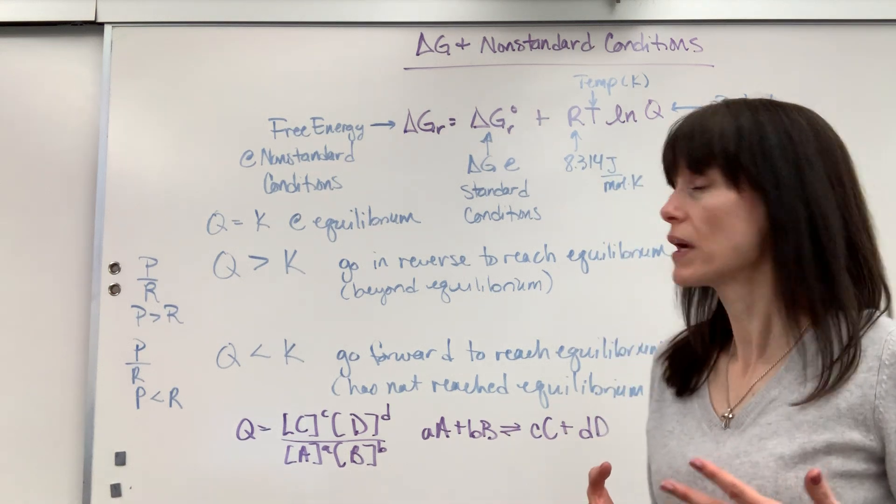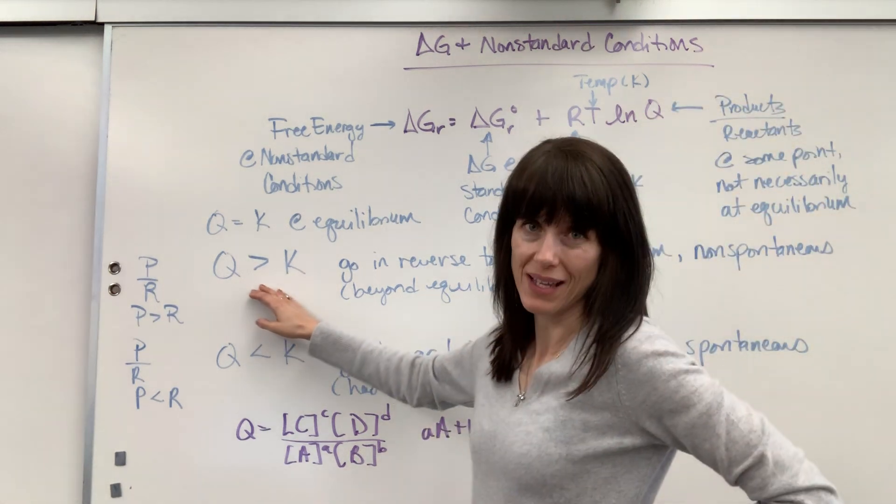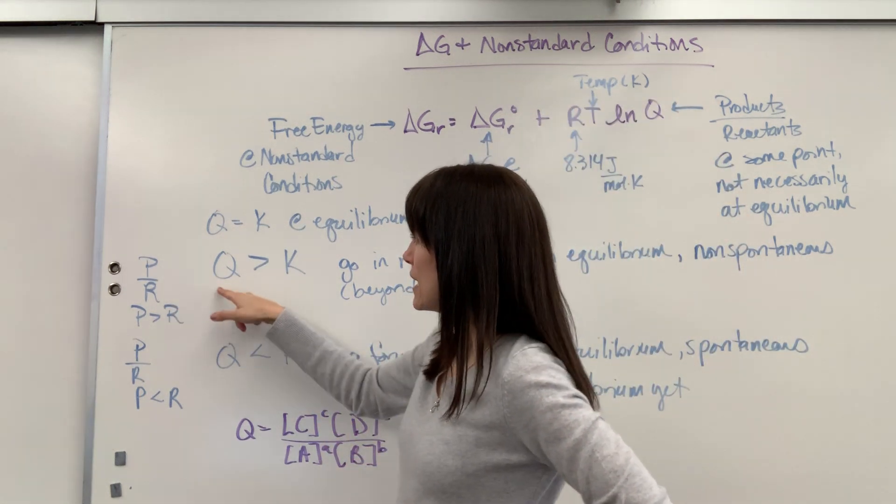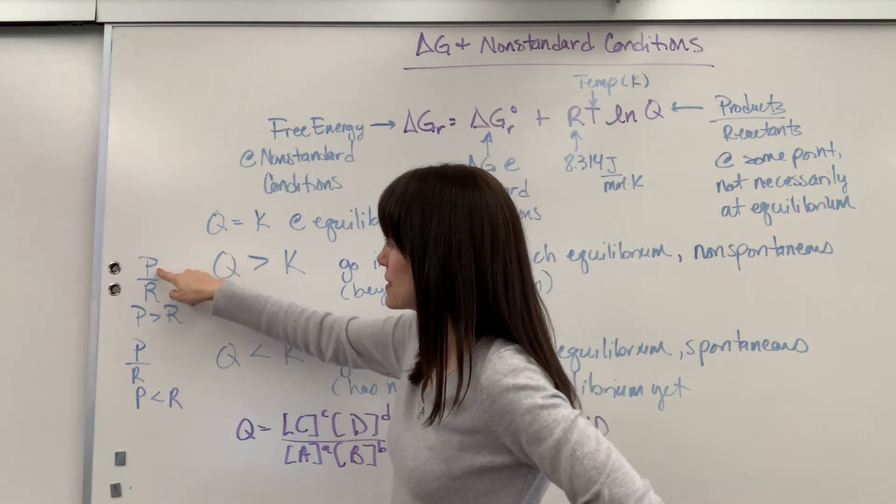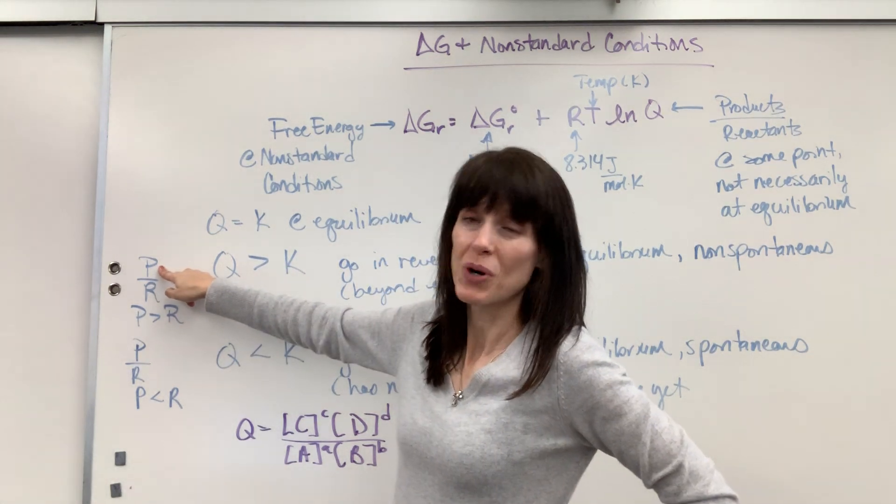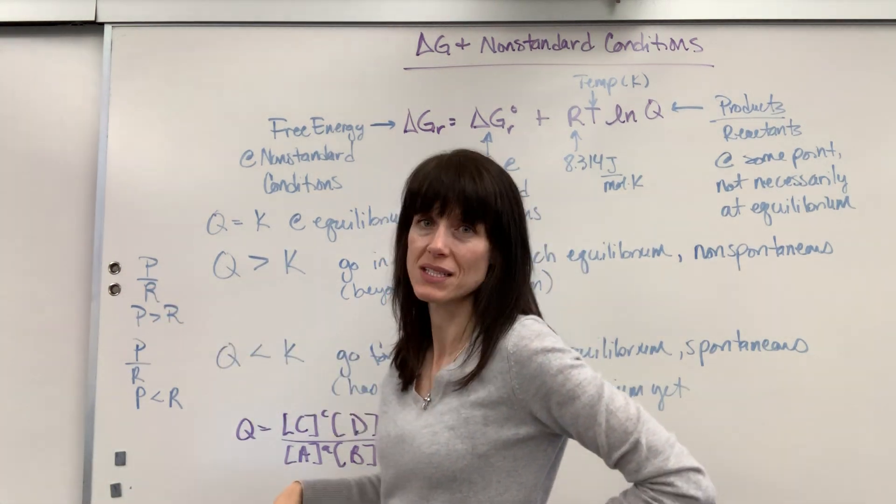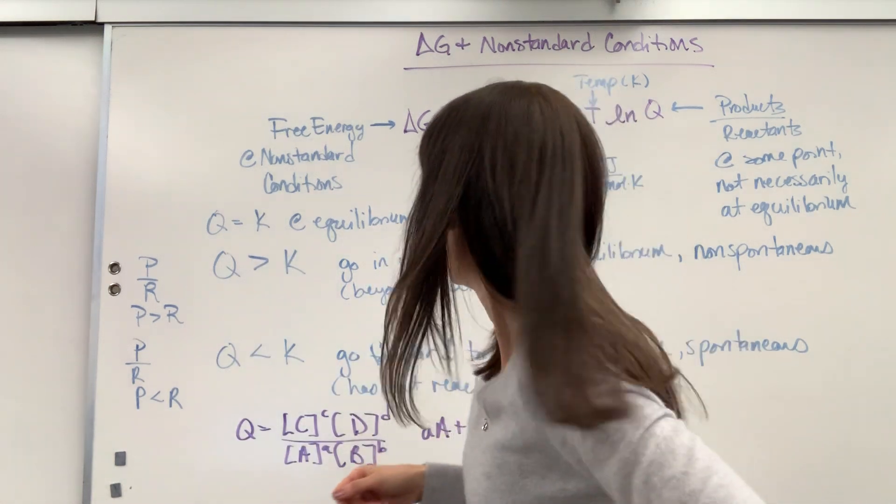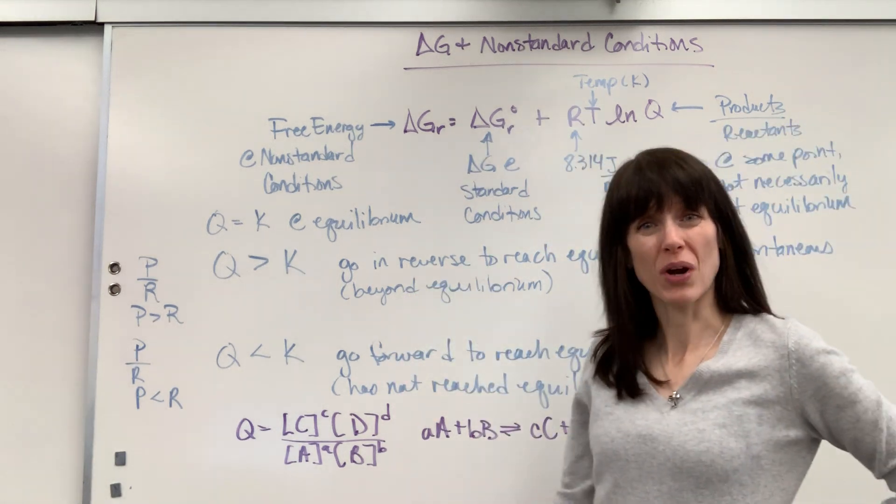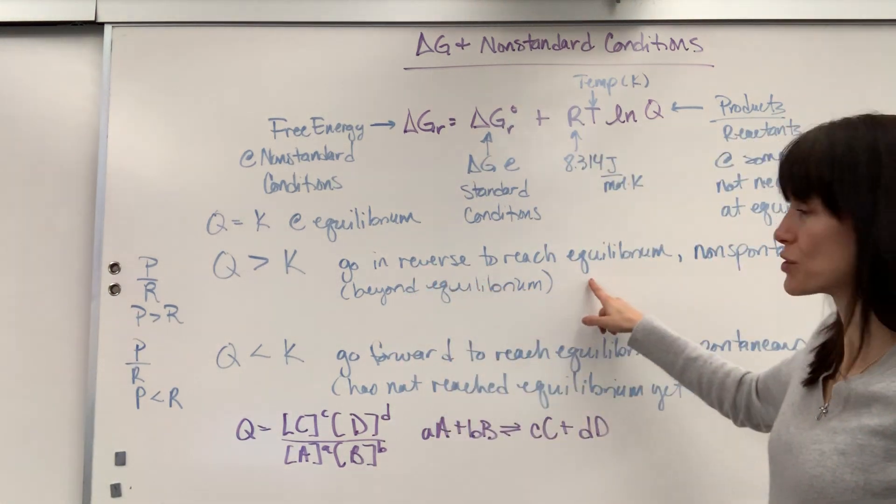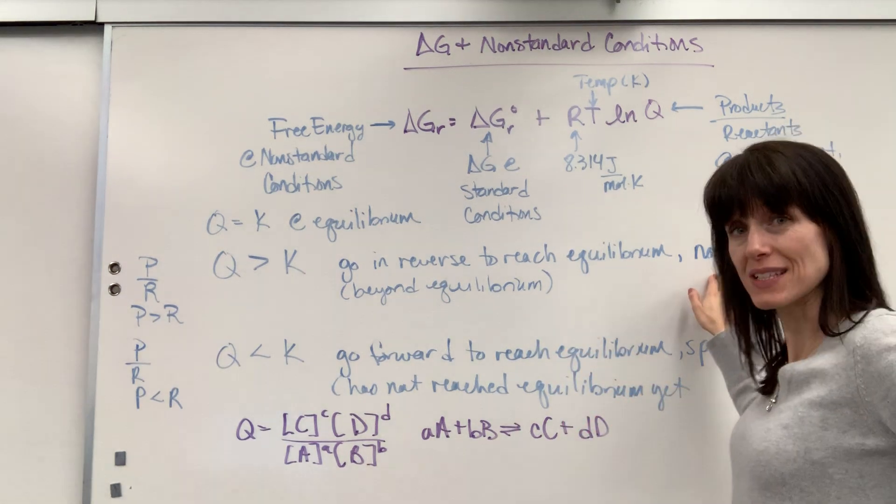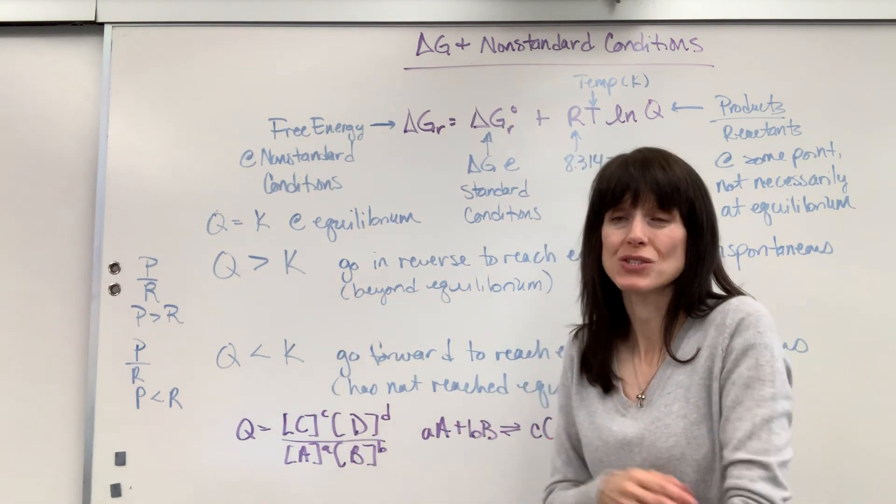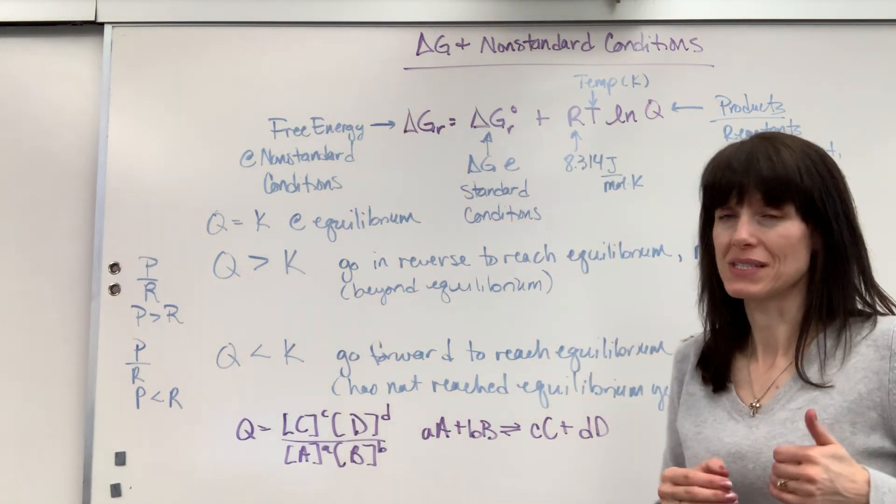But we could have two other situations. Let's say that Q is bigger than K. And so, I want you to think this out, just basic math. Remember, products over reactants. If Q is larger, it means that we must have more of the numerator, more products. I've got more products than reactants. If I have more products, it means that we've overshot equilibrium. We've gone past equilibrium. So what's going to happen, I have too many products, it's going to go in the reverse direction to reach equilibrium. That is not spontaneous. That's not spontaneous. We went beyond, we made too many products, too many products. So not spontaneous.